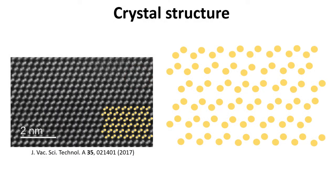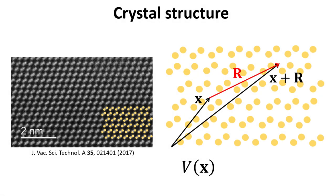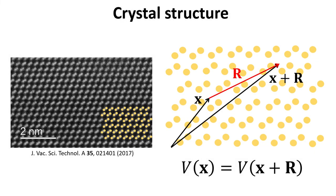Because of the periodic arrangement of ions in crystals, the potential felt by traveling electrons has a special property. Consider the periodic arrangement of atoms shown. Let the potential felt by an electron at an arbitrary location x be V of x. Because of the periodicity of the structure, one can always find a displacement vector R such that the local environment around x plus R looks exactly the same as the local environment around x. Because of this, the potential felt by electrons at x plus R is the same as the potential felt by electrons at x. That is, the potential felt by electrons in crystals is periodic in space.